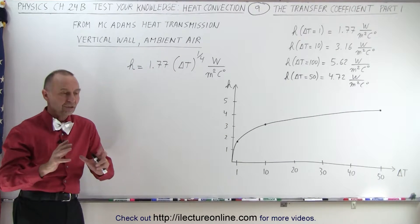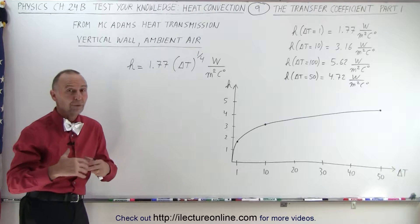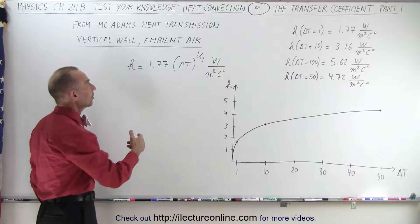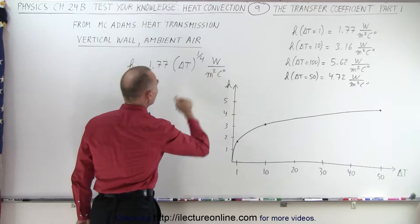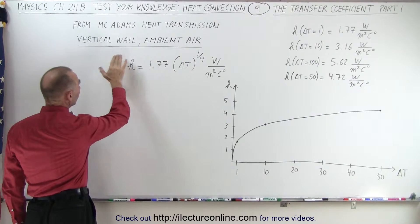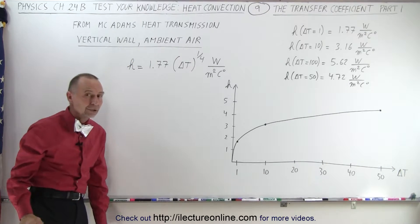That is actually a very simplified form of what it really is equal to, but it gives us a good way of looking at it. The units in this case were converted to watts per square meter per centigrade degree, and that is applicable to a vertical wall under ambient air conditions.